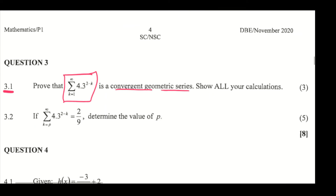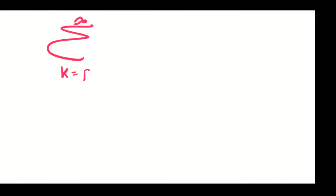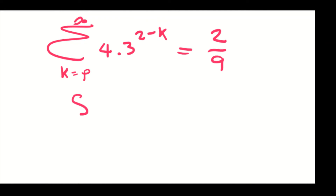Now we do question 3.2, where we are told that this sum — which is the same as the previous one but starting at k equals p — equals 2 over 9. We must find the value of p. So we have the sum to infinity from k equals p of 4 times 3 to the power of 2 minus k, which equals 2 over 9.